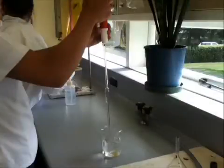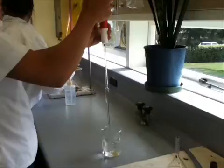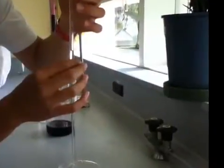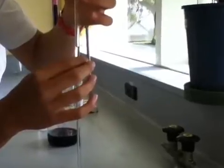Use pipette filler to suck up the solution in the pipette above the etched line on the neck of the pipette. Release some of the solution so the bottom of the meniscus sits just above the etched line.